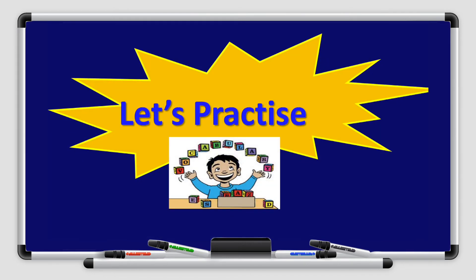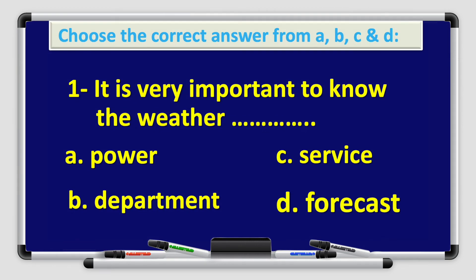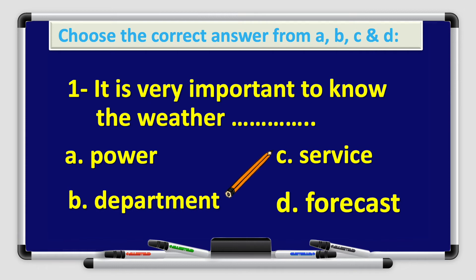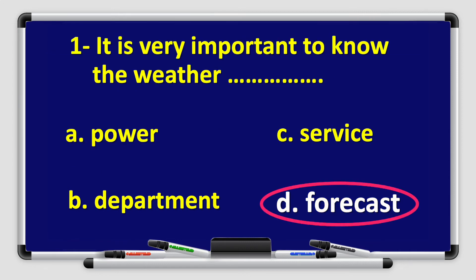Now let's practice together. Choose the correct answer from A, B, C, and D. Number one: it is very important to know the weather ___. Options: A. Power, B. Department, C. Service, D. Forecast. Excellent — it is very important to know the weather forecast.